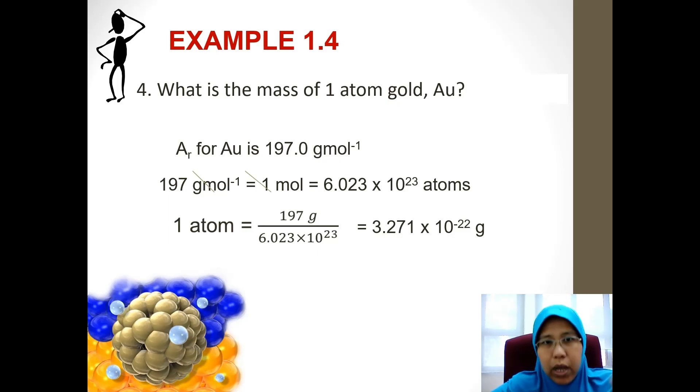Therefore you find the relative atomic mass of gold and then you divide it with the Avogadro number, and you will get 3.271 times 10 to the power of negative 22. That is a logical answer. You will get also two marks for this question.